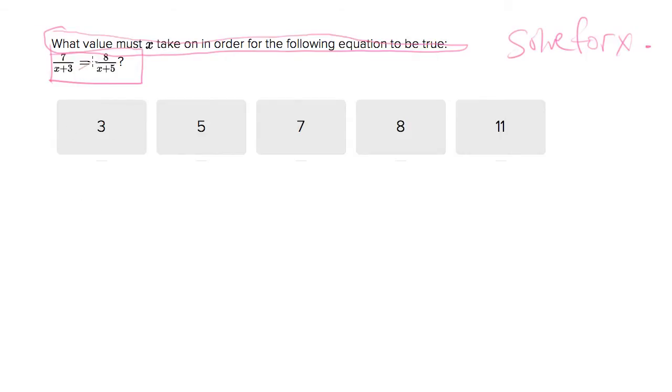So let's do that. And I'm going to start out by doing kind of a cross multiply here. So we end up with 7 times x plus 5 equals 8 times x plus 3.